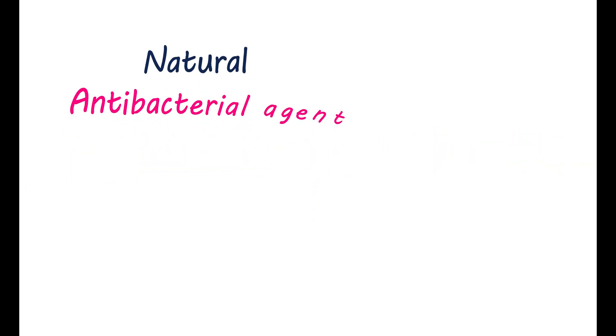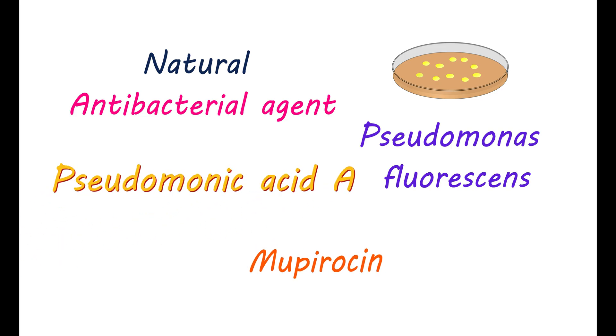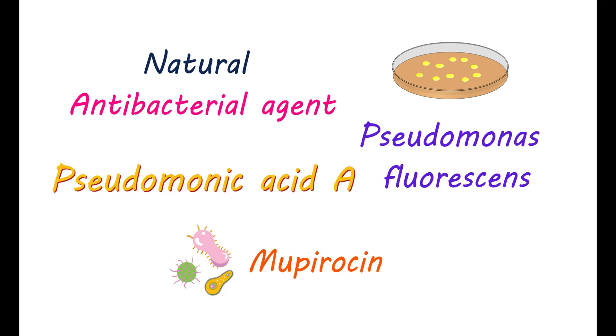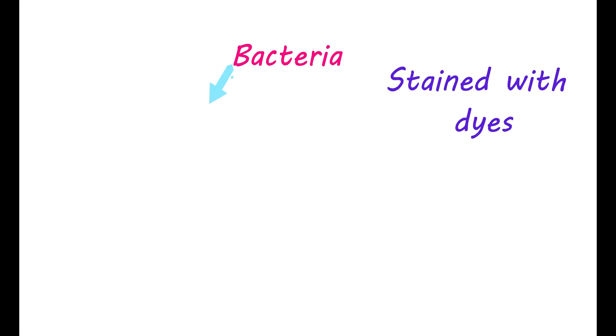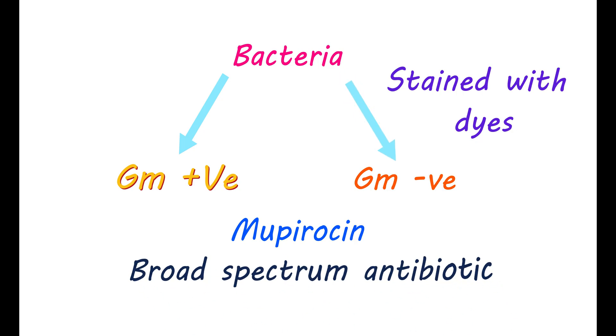What is Mupiracin? This medication is a natural antibacterial agent that is derived from cultures of the bacteria Pseudomonas fluorescens. That's why it's also called Pseudomonic acid. Mupiracin shows activity on various types of bacterial infections. Bacteria can be classified into two groups based on how they are stained with dyes — gram-positive and gram-negative. Mupiracin is effective against both groups, and therefore it is called a broad-spectrum antibiotic.